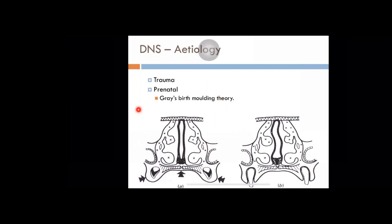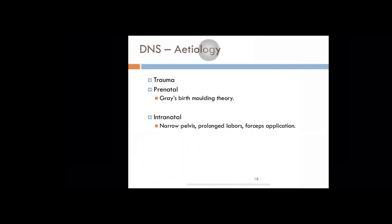The prenatal theory: abnormal postures of the fetus in intrauterine life can lead to molding of the septum. It changes shape due to compression forces acting on the maxilla, palate, and the nasal septum itself. This molding leads to deviated nasal septum in later life. Also intranatal — during delivery with a narrow pelvis, difficult labor, prolonged labor, or assisted labor using forceps can be traumatic to the nose, leading to deviated nasal septum.